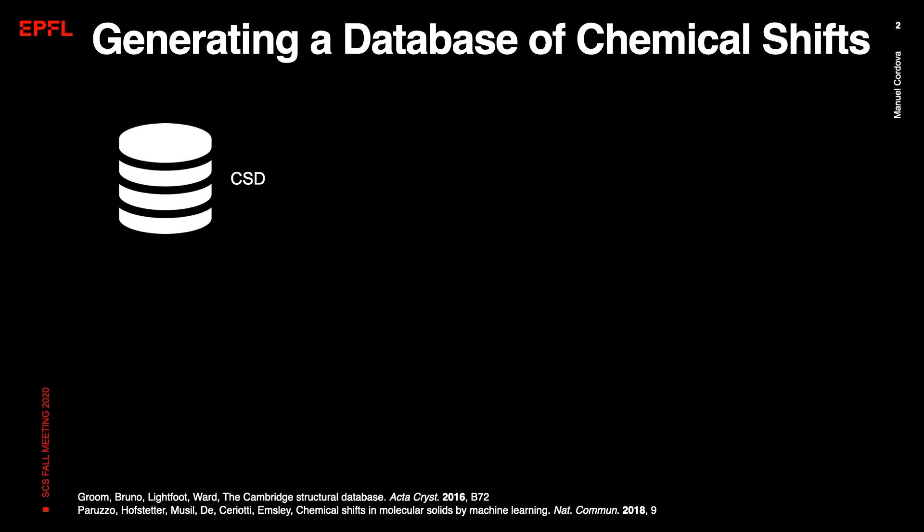So, we decided to generate this database ourselves by combining the Cambridge Structural Database, which contains over 200,000 organic crystal structures, with ShiftML, a machine learning algorithm developed by our lab that allows the prediction of chemical shifts for these structures.